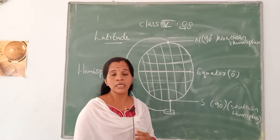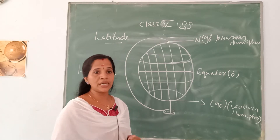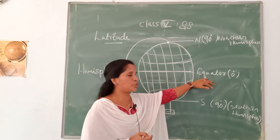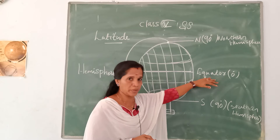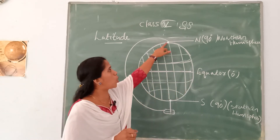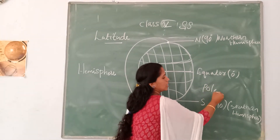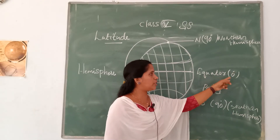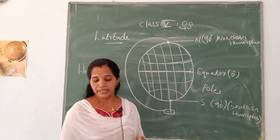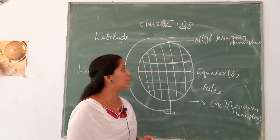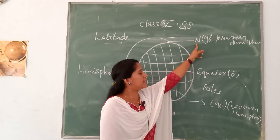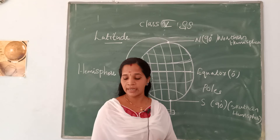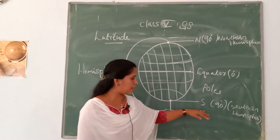The line that runs parallel to the equator is called a latitude. Another name for latitude is parallel. The equator is the longest latitude. The poles are the shortest latitude. Latitudes are marked in degrees — the equator is 0 degrees. The latitudes to the north of the equator are labeled N, and the latitudes to the south of the equator are labeled S.